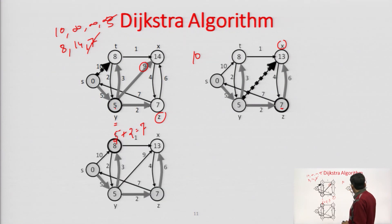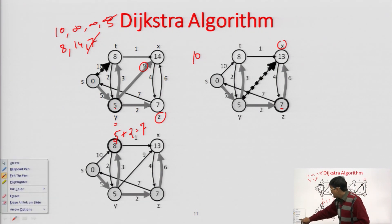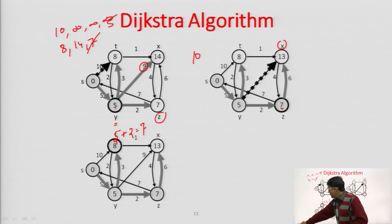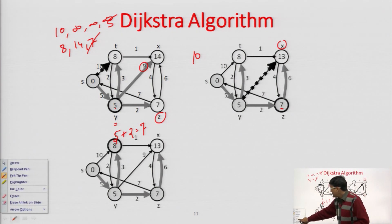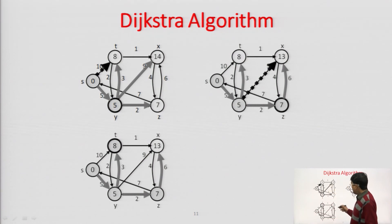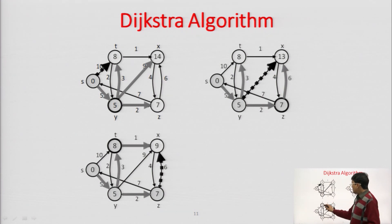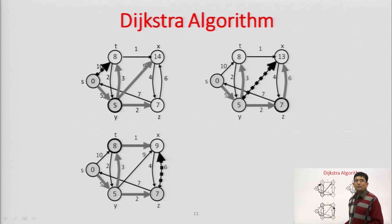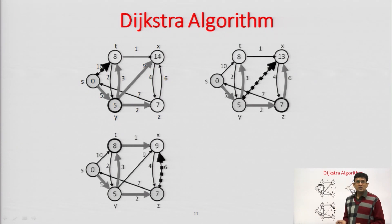There is also an edge from Z to S, but we will not consider that because that vertex has already been deleted. Next, the available vertices are T with cost 8 and X with cost 13. We select T with cost 8. If we go from T to X, that will be 8 plus 1 = 9. So we update X with 9 and apply this in the Dijkstra's algorithm.